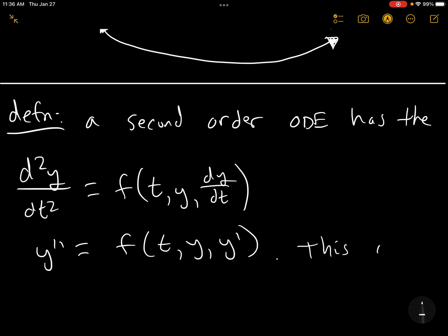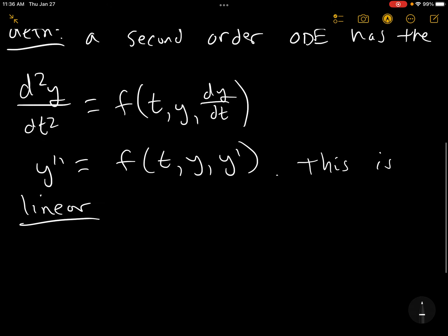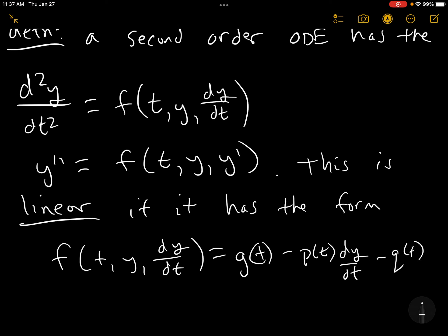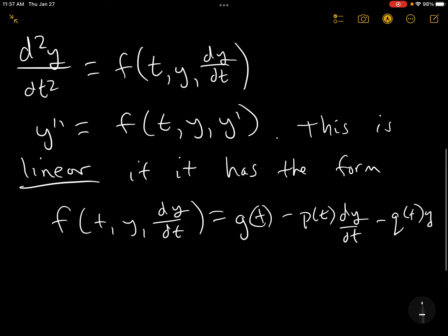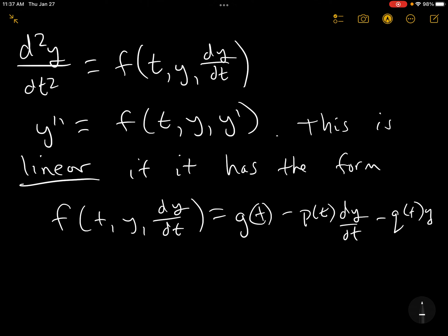This is linear. The second order ODE is linear if it has the form, so the F of T, Y, dY/dt has to be linear. So we have a function of T, and here's my dY/dt, and here's my Y. So F, this F, the right-hand side of the equation, has to be linear in T, Y, and Y prime.